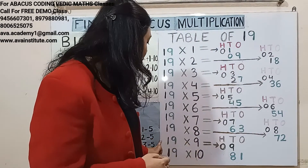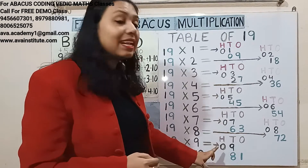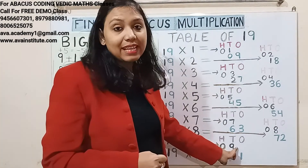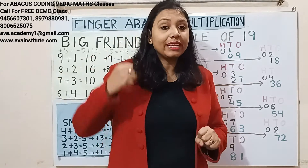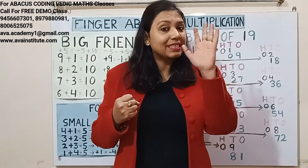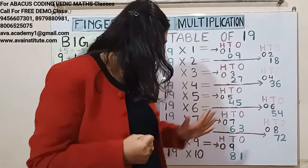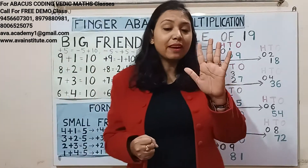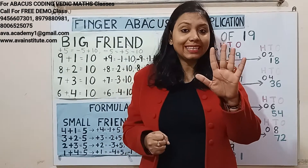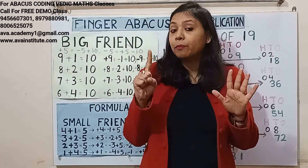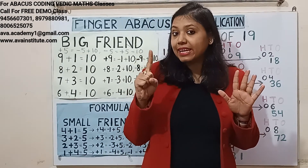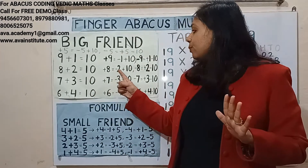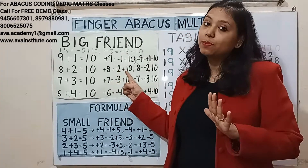19 nines are: 1 nine is 9 — in hundreds it's 0, in tens it's 9. 9 nines are 81 — in tens we have to represent 80 and in ones we have to represent 1. 1 we can add. How to add 80? Plus 8 formula is minus 2 plus 10.